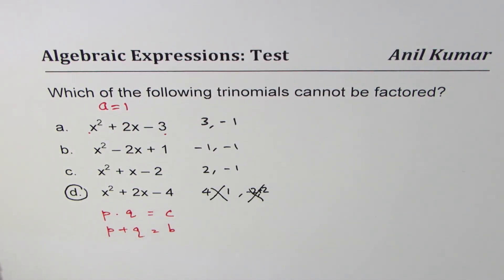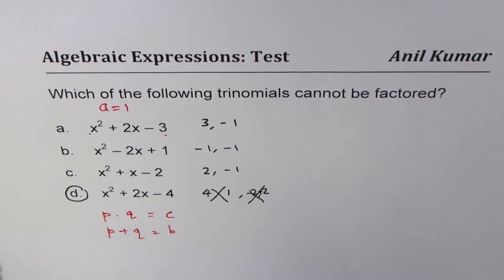So part D is the trinomial which cannot be factored. I hope that helps, thank you and all the best.